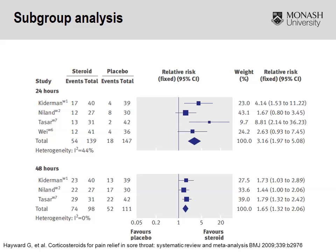The final analysis to discuss is the subgroup analysis. Here we're looking at different strata or groups such as age, duration, or type of intervention. This example looks at corticosteroids for pain relief in patients with a sore throat, broken down according to duration. The first four studies look at pain relief within the first 24 hours. The overall meta-analysis for those four studies shows a relative risk of 3.16. Pain relief is a good thing, so we want the relative risk to be above one — and this indicates a statistically significant beneficial outcome.